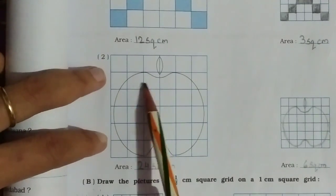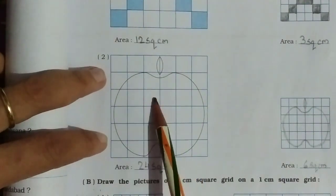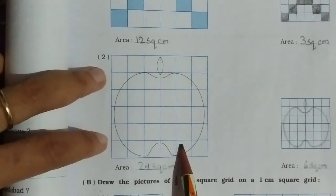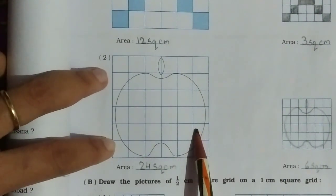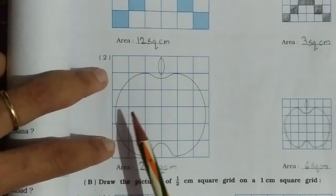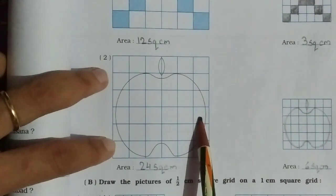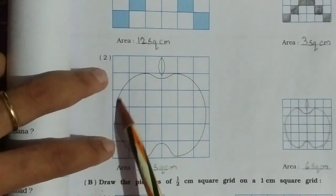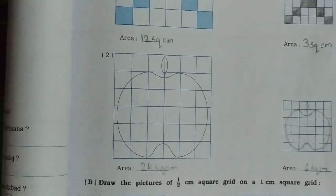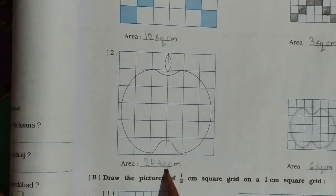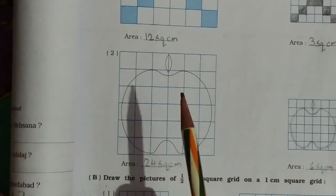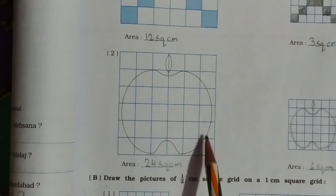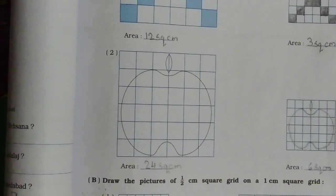For the second shape, count the boxes: 1, 2, 3, 4, 6, 7, 8, 9, 10, 11, 12, 13, 14, 15, 16, 17, 18, 19, 20. Then there are some half squares: 21, 22, 23, 24. Two halves make one full. When you add all the full and half squares together, you will get 24 square cm total.